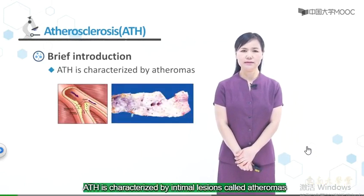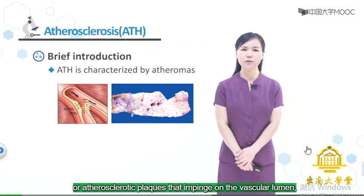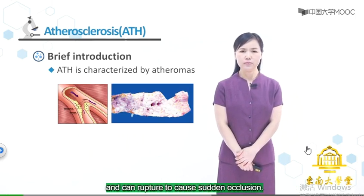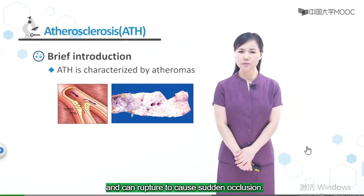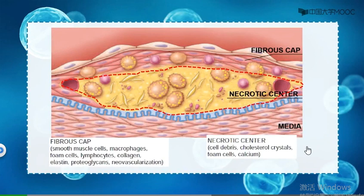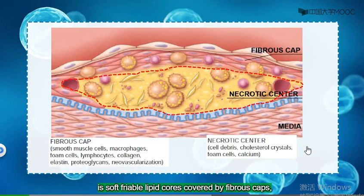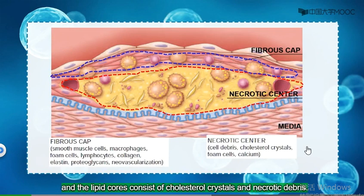ATH is characterized by intimal lesions called atheromas or atherosclerotic plaques that impede on the vascular lumen and can rupture to cause sudden occlusion. The basic structure of atheromas is a soft friable lipid core covered by fibrous caps, and the lipid core consists of cholesterol crystals and necrotic debris.